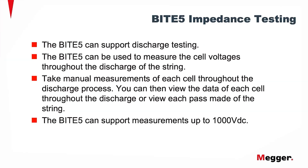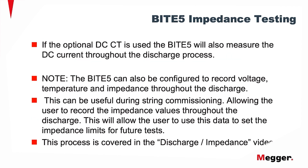The Byte5 can support discharge testing. It can be used to measure the cell voltages throughout the discharge of the string. Take manual measurements of each cell throughout the discharge process. You can then view the data of each cell throughout the discharge or view each pass made of the string. The Byte5 can support measurements up to 1000 volts DC. If the optional DC current clamp is used, the Byte5 will also measure the DC current throughout the discharge process.